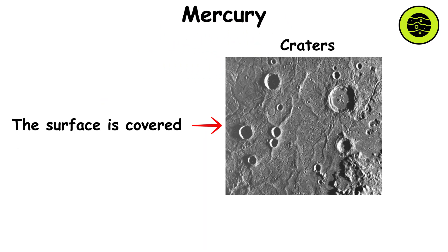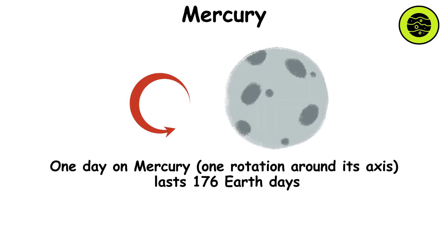The surface is covered with craters, resembling the Moon. One day on Mercury, one rotation around its axis, lasts 176 Earth days.